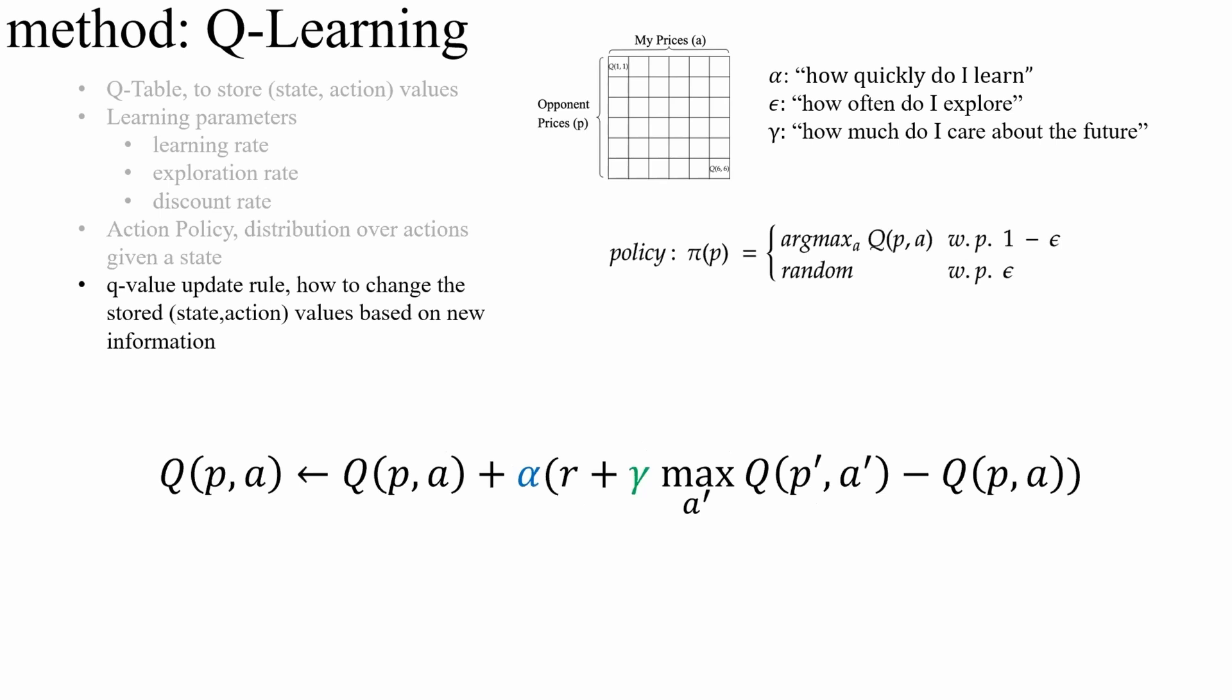And finally, we have the equation that determines how we update our beliefs given a new piece of information. So given that our opponent set a price and we set a new price for the next round, where our opponent then sets a new price and we achieve a particular reward, a particular profit in the market duopoly, how do we update the belief of taking an action given the previous opponent's price? And alpha, the learning rate, tells us how quickly we learn, and gamma weights the future. So what can we do in the next step given the new opponent's price? It tells us again how much we care about the future.